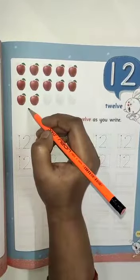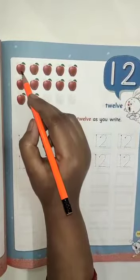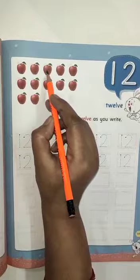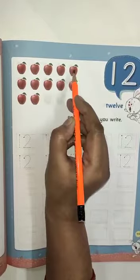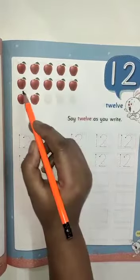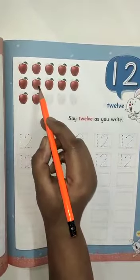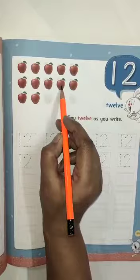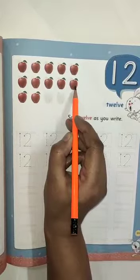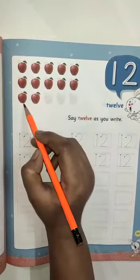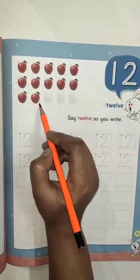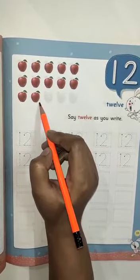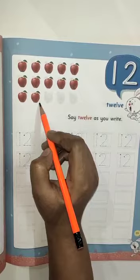Count these apples: 1, 2, 3, 4, 5, 6, 7, 8, 9, 10, 11, 12. These are 12 apples.